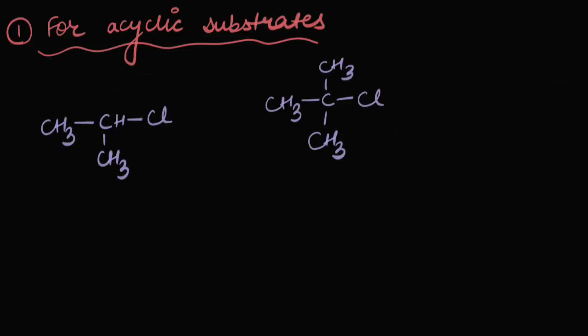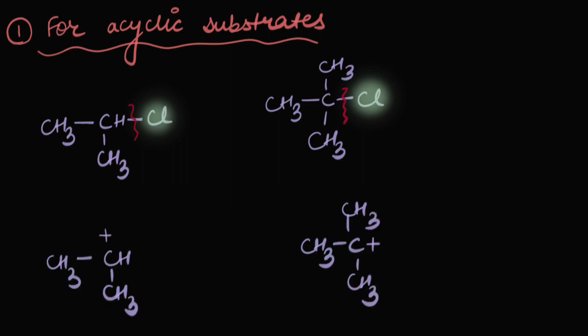Let's focus on the carbocation stability factor. If I'm given a question with two substrates and asked which would react the fastest via an SN1 reaction, I'd have to check what bond to break. In both cases I can see how Cl⁻ would actually leave. So the next thing I should focus on is breaking the bond and seeing which carbocation would be more stable, since the leaving group is the same.